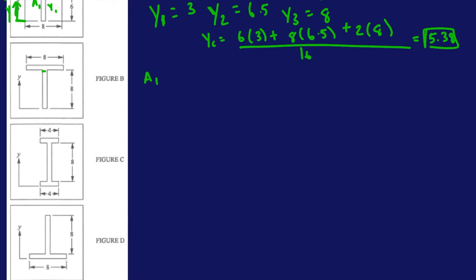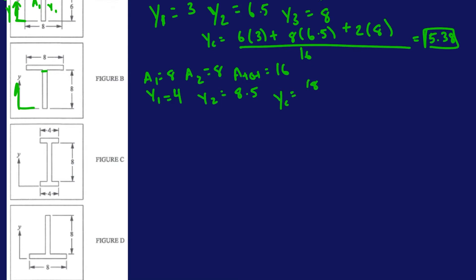Let's repeat this process. For Figure B: A1 is 8 times 1, which is 8; A2 is 8 times 1, which is 8; total area is 16. We define our axes relative to the bottom. Y1: halfway up is the centroid, so that's 4. Y2: that's 8 plus one half, which is 8.5. Then we do the weighted average: 8 times 4 plus 8 times 8.5, divided by the total area of 16. That gives you 6.25.